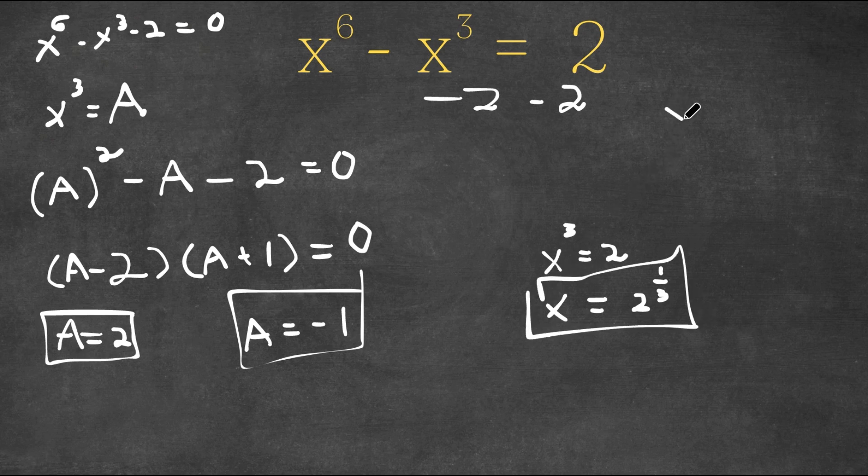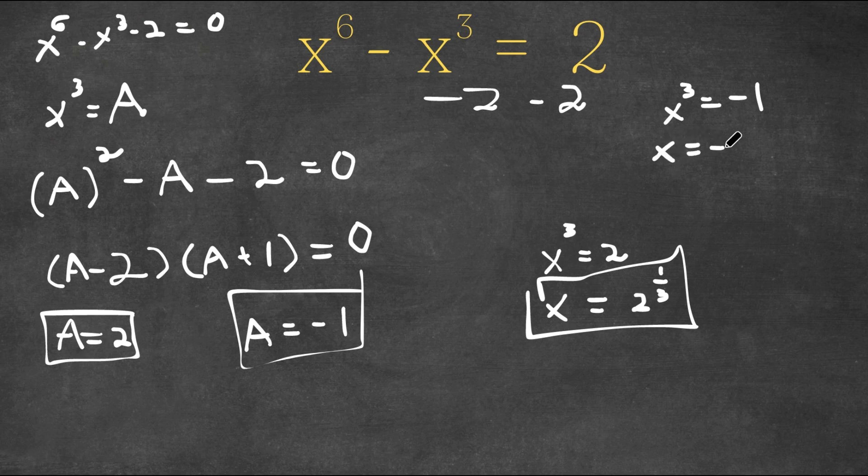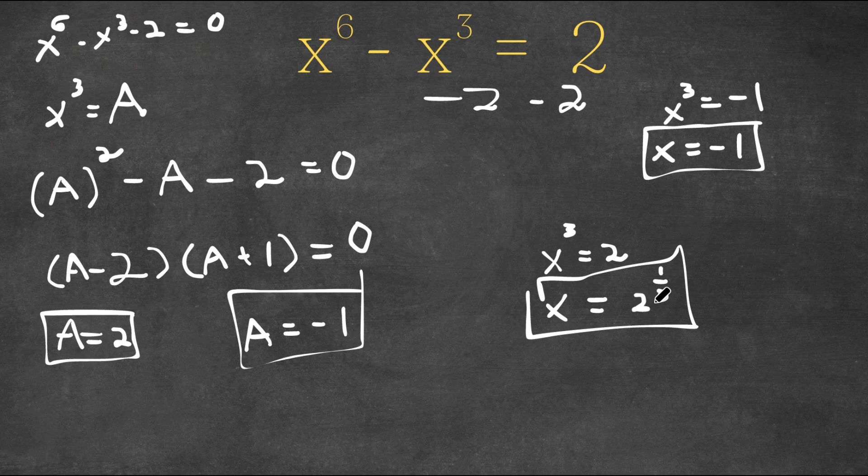And we also have x to the power of 3 is equal to negative 1. So negative 1 and 2 to the power of 1 over 3 are our two answers.